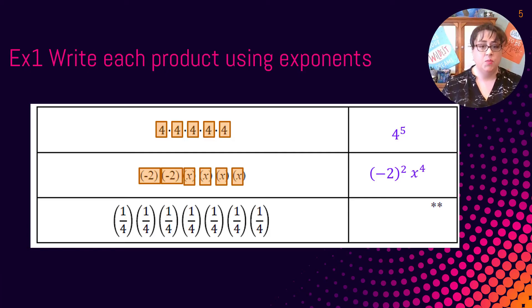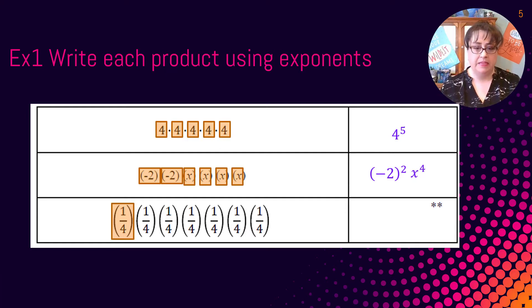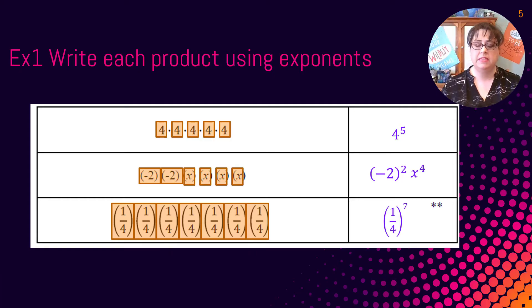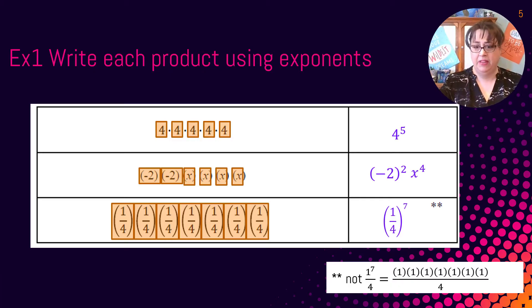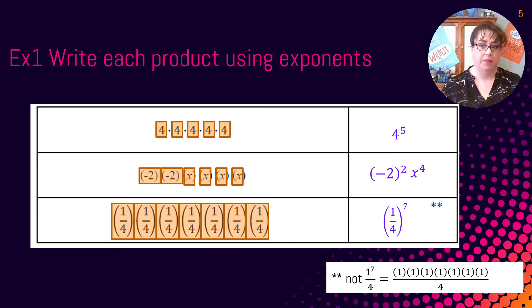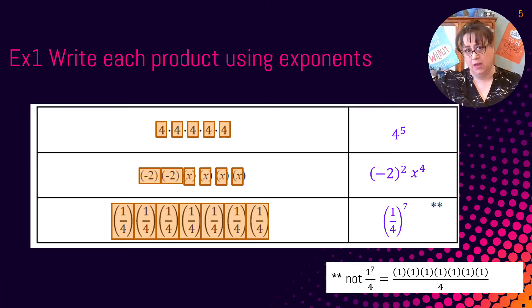For the last one, we have a base of one-fourth, used seven times, so we write (1/4) to the 7th power. Make sure you put that 1/4 into parentheses. If you don't and just write 1 to the 7th, you're only raising the 1 to the 7th power and not the 4. That would give you 1×1×1×1×1×1×1 across the top and just a 4 on the bottom — not what we want.